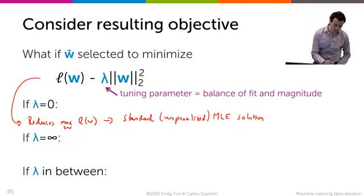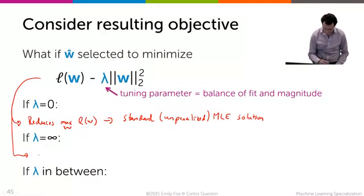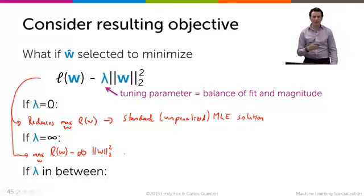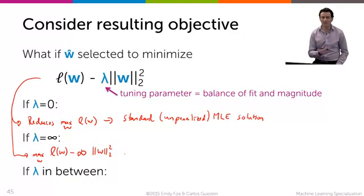Now, if I set lambda to be too large, for example, if I set it to be infinity, what happens? Well, the optimization becomes the maximum over w of L of w minus infinity times the norm of the parameters, which means the L of w gets drowned out. All I care about is that infinity term.